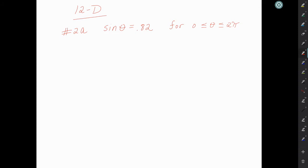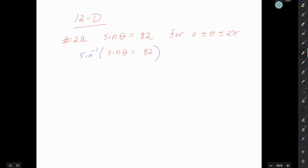So one of the problems I assigned from 12D, number 2A, was sine of theta equals 0.82, and we're looking for values of theta between 0 and 2π. The first thing we want to do is take the inverse sine of both sides. When we take the inverse sine of both sides, we get theta on the left, and we get inverse sine of 0.82 on the right.